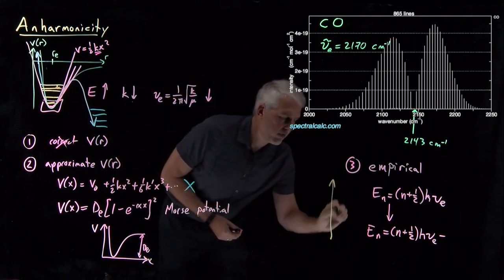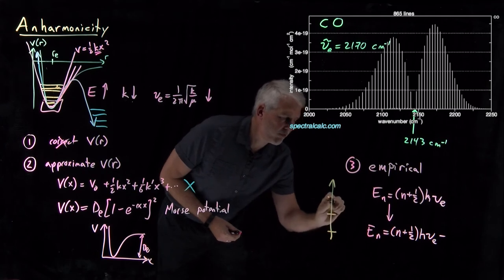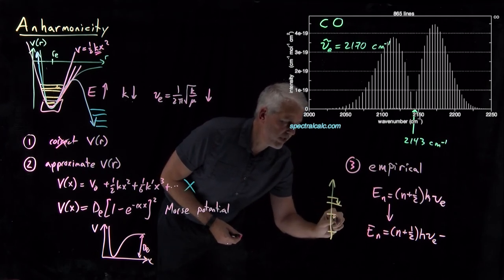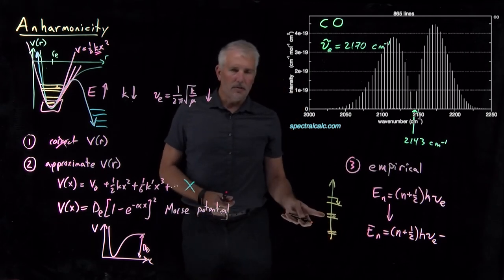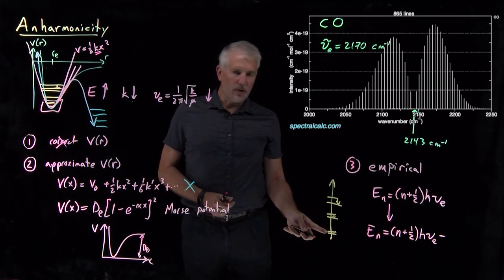Instead of one half hν, three halves hν, five halves hν, we want each one of those to be shifted down by a little bit. We want that correction to be larger for the upper levels, moderate and smaller as we go down the ladder.